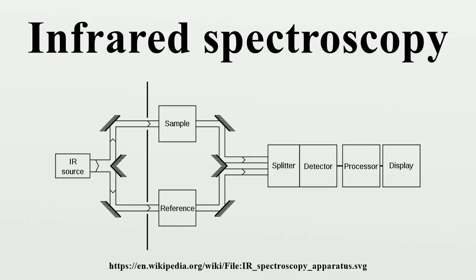Fourier Transform Infrared Spectroscopy (FTIR) is a measurement technique that allows one to record infrared spectra. Infrared light is guided through an interferometer and then through the sample. A moving mirror inside the apparatus alters the distribution of infrared light that passes through the interferometer. The signal directly recorded, called an interferogram, represents light output as a function of mirror position. A data processing technique called Fourier Transform turns this raw data into the desired result: light output as a function of infrared wavelength. The sample's spectrum is always compared to a reference.